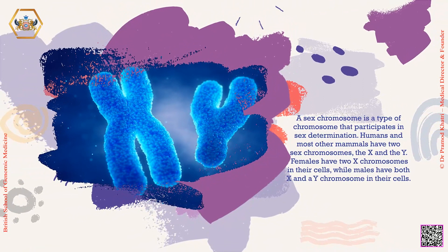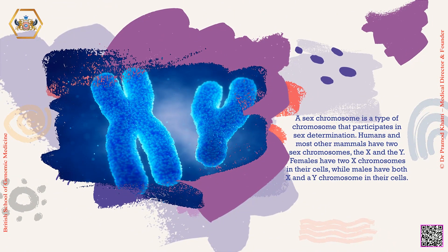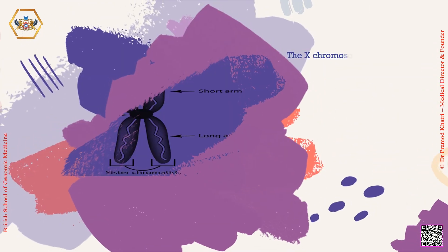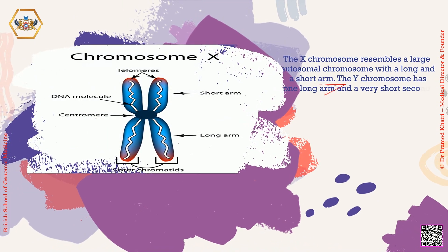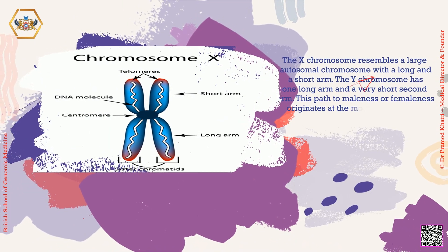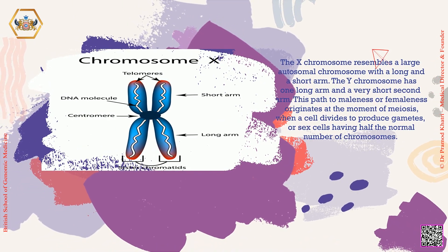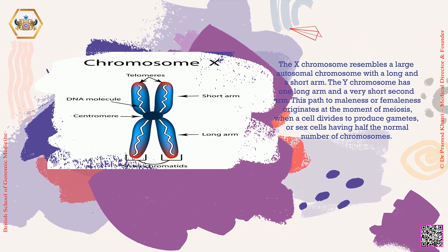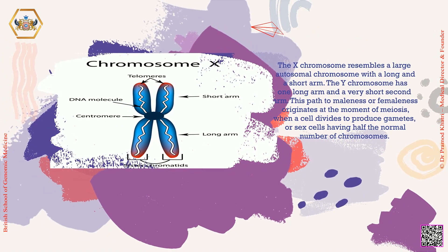Humans and most other mammals have two sex chromosomes, the X and the Y. Females have two X chromosomes in their cells, while males have both X and Y chromosomes in their cells. The X chromosome resembles a large autosomal chromosome with a long and a short arm. The Y chromosome has one long arm and a very short second arm.